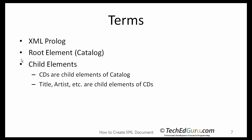Summarizing, we were able to create a simple XML document from a table. Here are the terms that we came across: XML Prolog — the line that appeared in the one dot XML file at the top. Catalog, which is the top level element, is called the root element in XML terminology. The root element can have child elements — CDs are child elements of catalog, and then title, artist, etc. are child elements of CDs, and so forth.